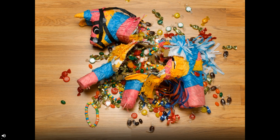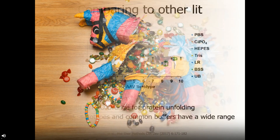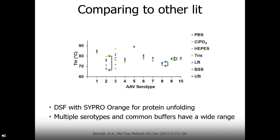Now we know we can crack open the AAV piñata — let's take a further look at the impact of formulations. Taking a pit stop in the literature, in a paper by Bennett, a variety of buffers were tested and it's apparent that the choice of buffer impacts protein unfolding and AAV stability. Here I'm highlighting AAV serotypes 2, 8, and 9, which we'll check out on UNCLE shortly. The authors use a DSF method with Sypro Orange dye that looks specifically at the protein unfolding behavior of AAV capsids, and we'll compare our protein intrinsic stability to those data points from Bennett.